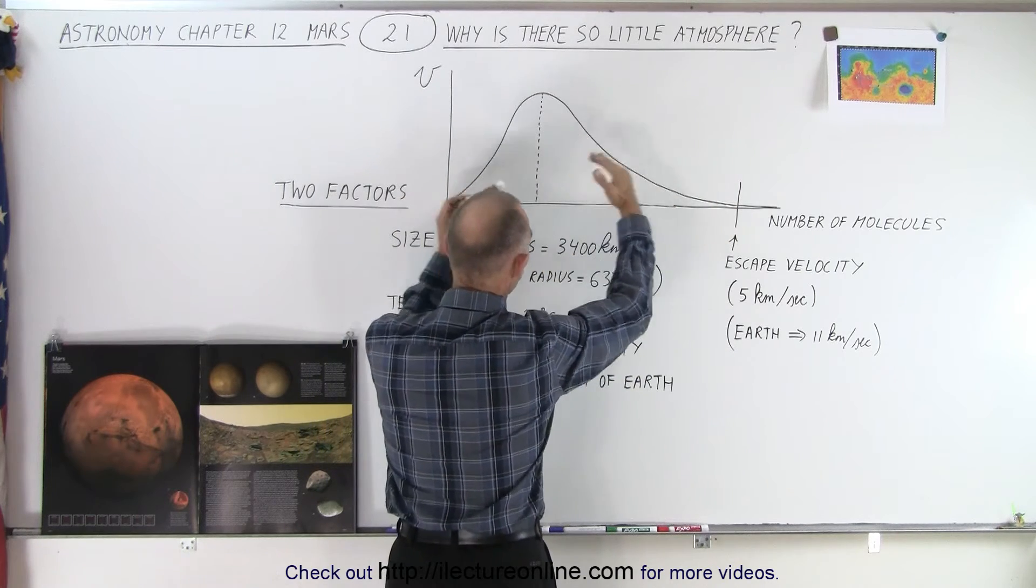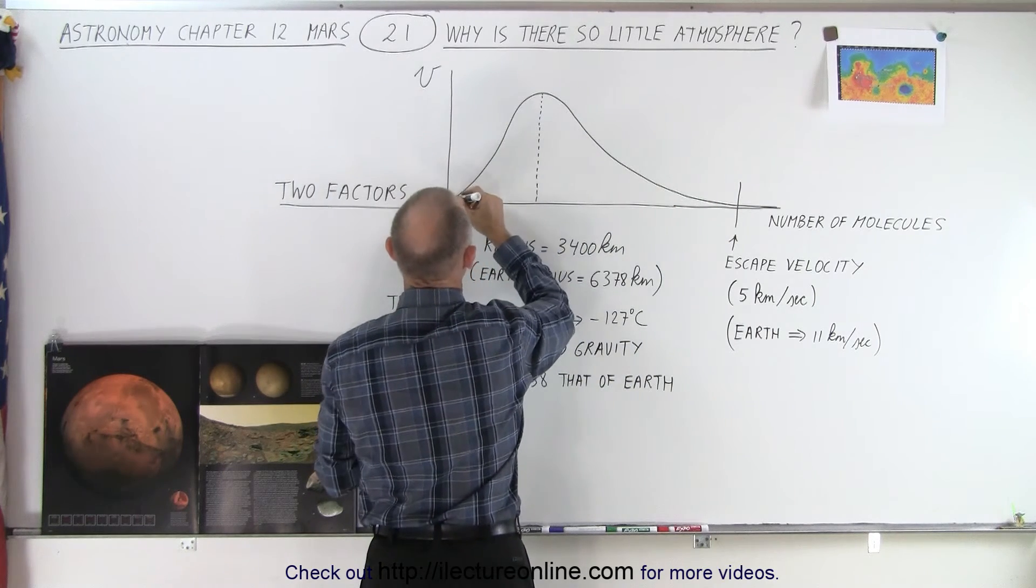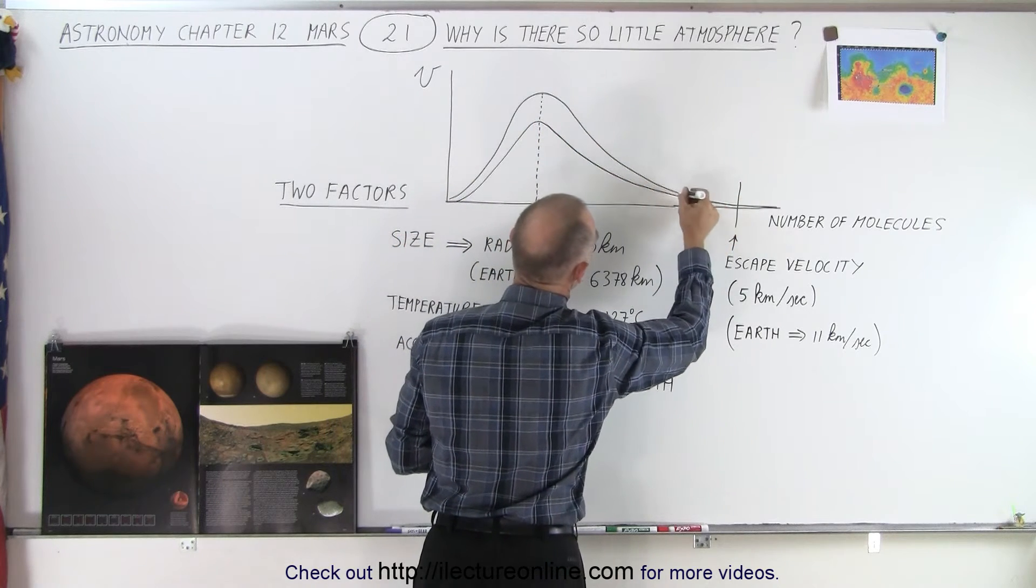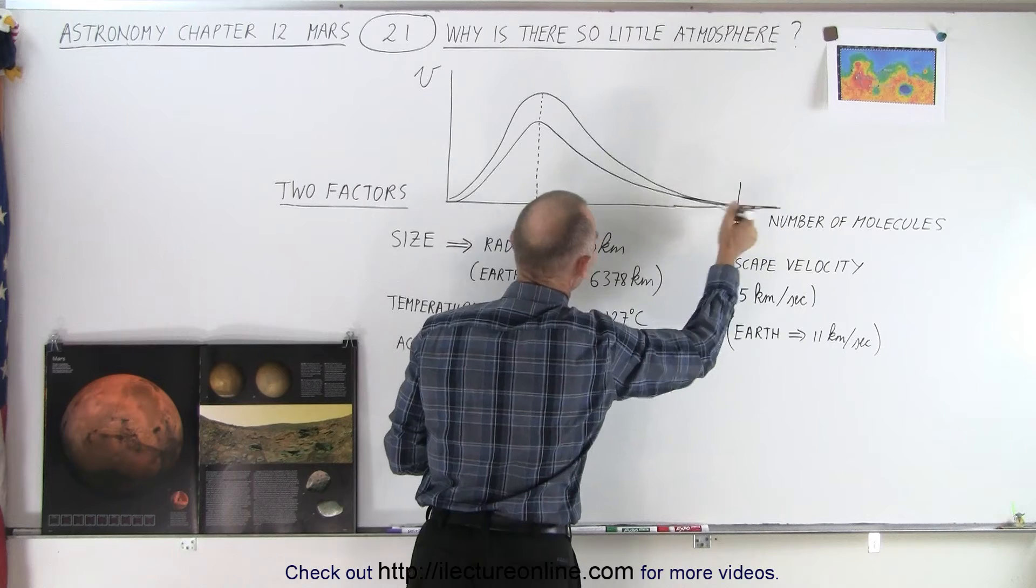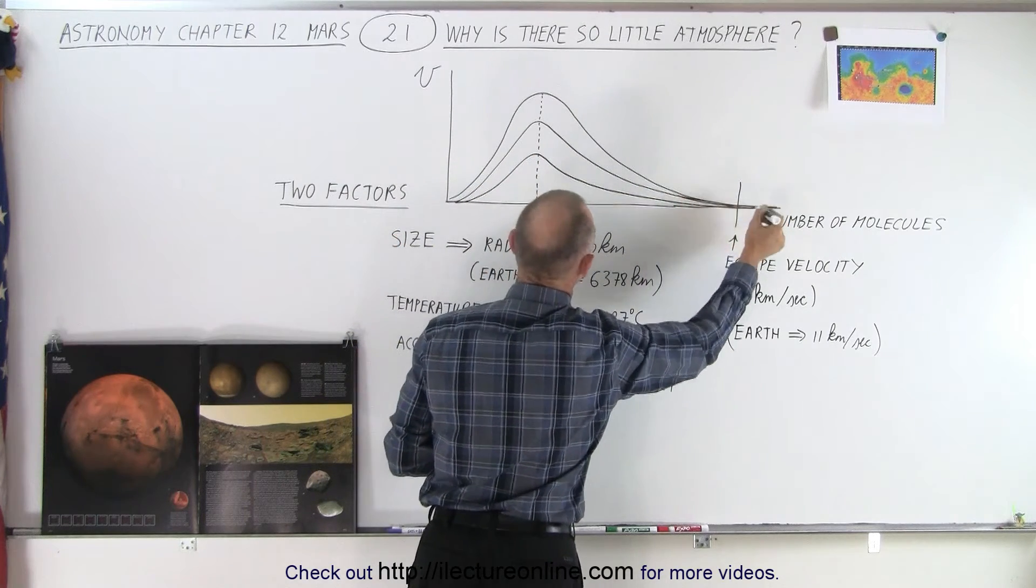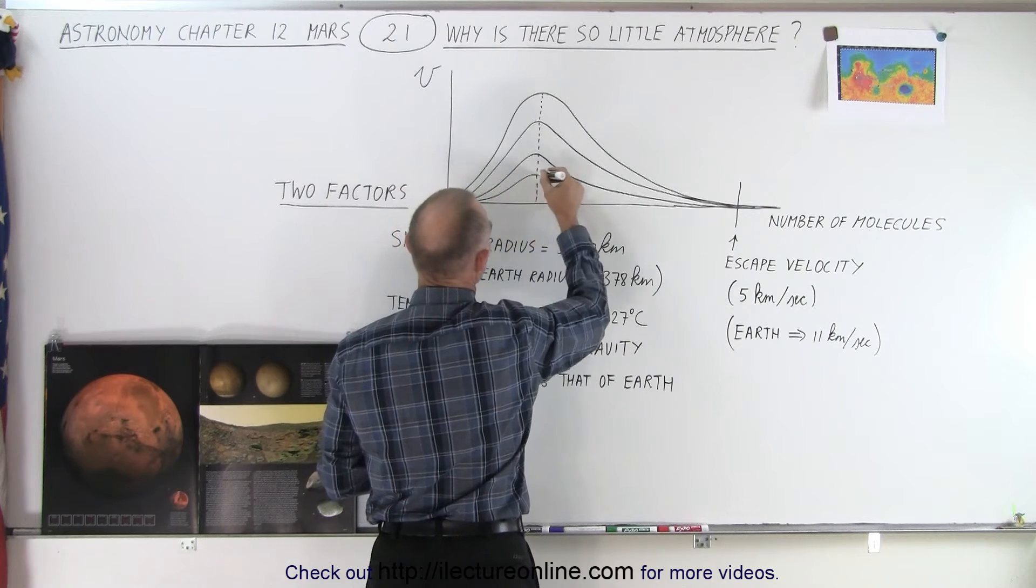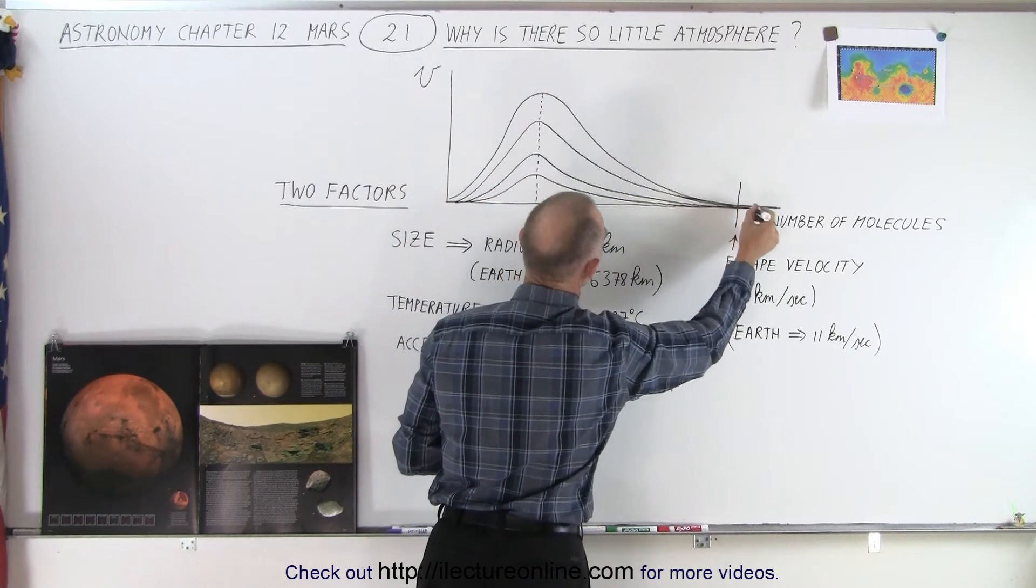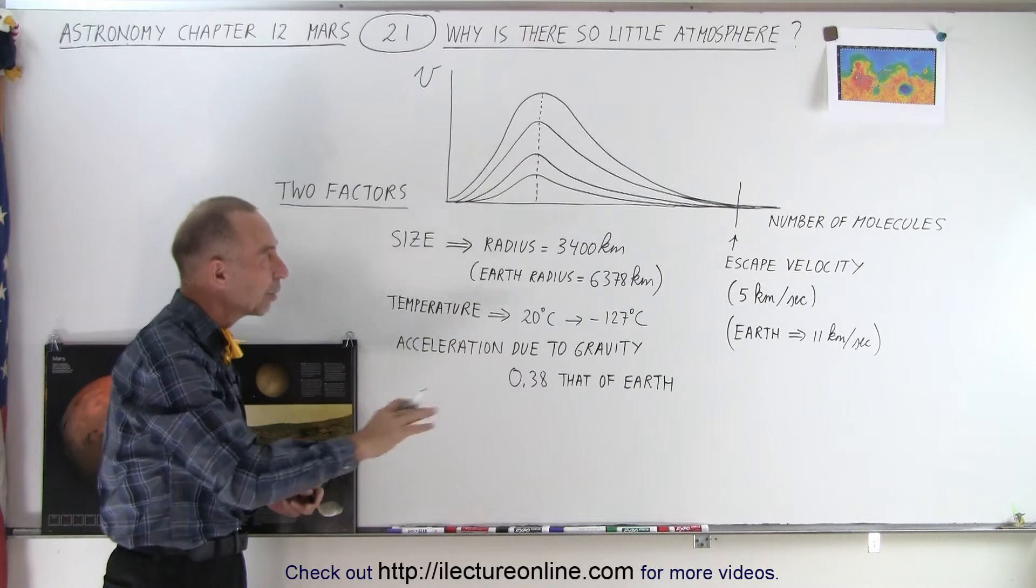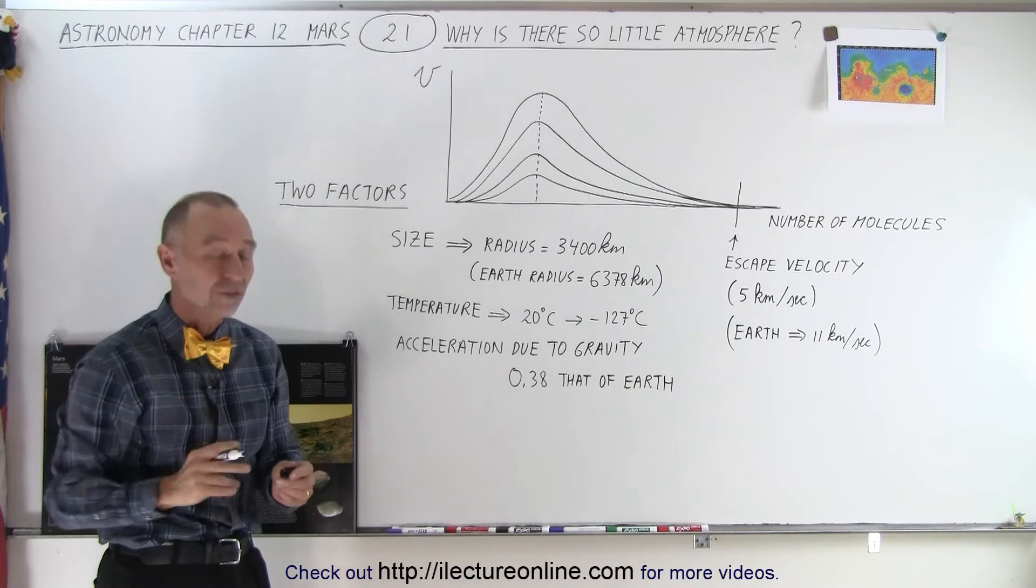And what happens is, when molecules escape, this whole chart rearranges itself, and less and less atmosphere will be there. But always, there will always be a few molecules that go fast enough to escape, and as less and less atmosphere appears on the surface of Mars, molecules will continue to escape, because a few of them will always go faster than the escape velocity. And over time, the atmosphere simply disappears to space.